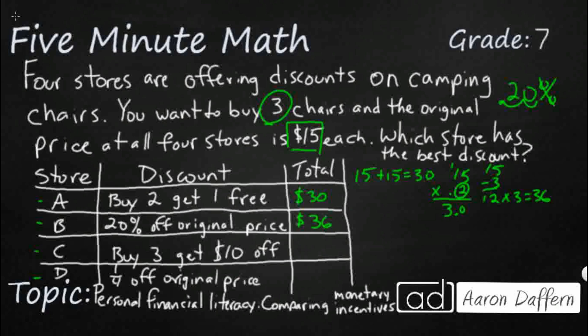So store C, buy three, get $10 off. Let's just buy three. I've got 15, 15, 15, or I guess I could have multiplied by three, but that's fine. That is going to be $45, take away 10. And that is going to be $35. That's actually pretty close to store B. So I'm getting closer, not quite there yet.